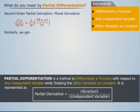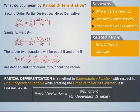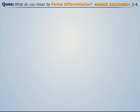Similarly, we get ∂²z/∂y∂x. The above two equations will be equal if and only if f(x,y), ∂f/∂x, ∂f/∂y, ∂²z/∂x∂y, and ∂²z/∂y∂x are defined and continuous throughout the region.